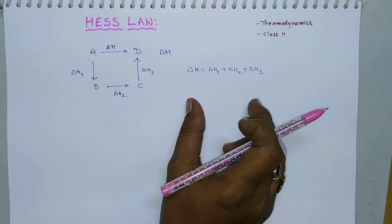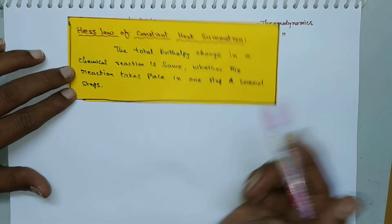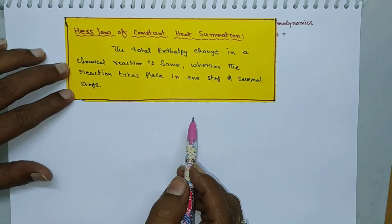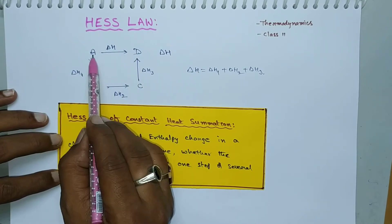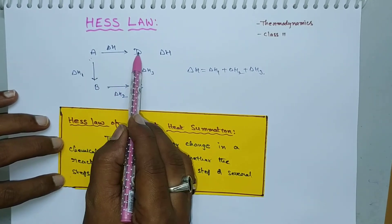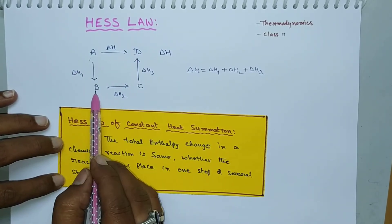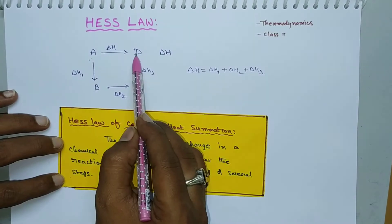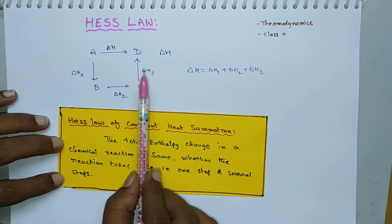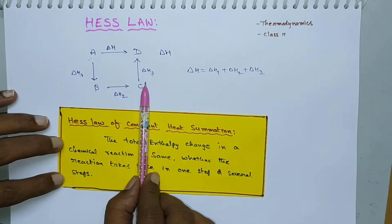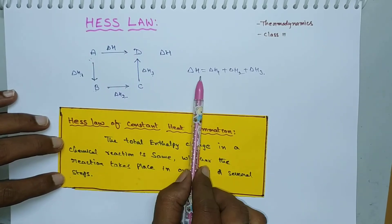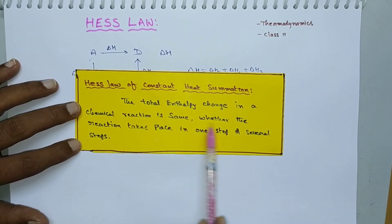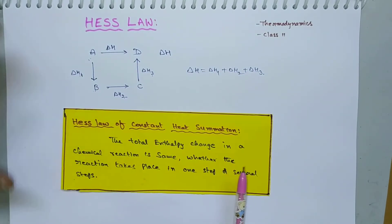So this is the definition of Hess's Law: the total enthalpy change in a chemical reaction is the same whether the reaction takes place in a single step or several steps. Here, A to D directly is a single-step process, or it takes place in three steps with enthalpy changes delta H1, delta H2, and delta H3. The total enthalpy change across those three steps equals the direct enthalpy change.